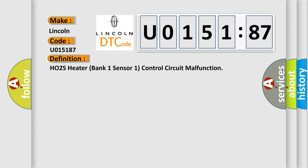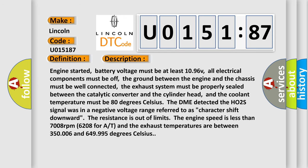Here is a short description of this DTC code. Engine started, battery voltage must be at least 10.96 V, all electrical components must be off, the ground between the engine and the chassis must be well connected, the exhaust system must be properly sealed between the catalytic converter and the cylinder head, and the coolant temperature must be 80 degrees Celsius. The DME detected the HO2S signal was in a negative voltage range referred to as character shift downward, the resistance is out of limits, the engine speed is less than 7008 RPM, and the exhaust temperatures are between 350 and 649.995 degrees Celsius.